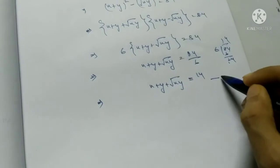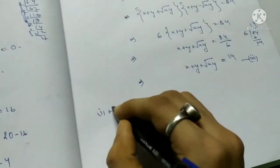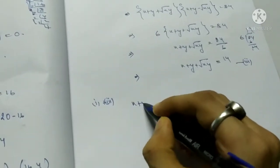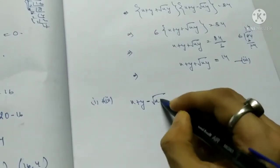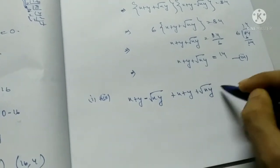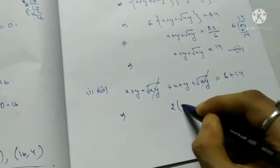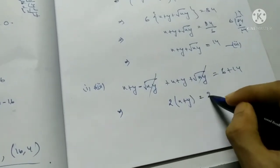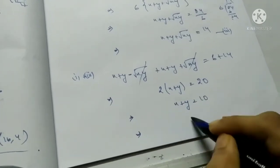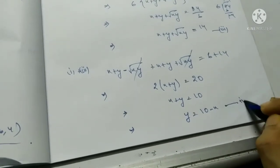Adding equation 1 and equation 3: 2(x plus y) equals 6 plus 14 equals 20, so x plus y equals 10, giving y equals 10 minus x. This is equation 4.